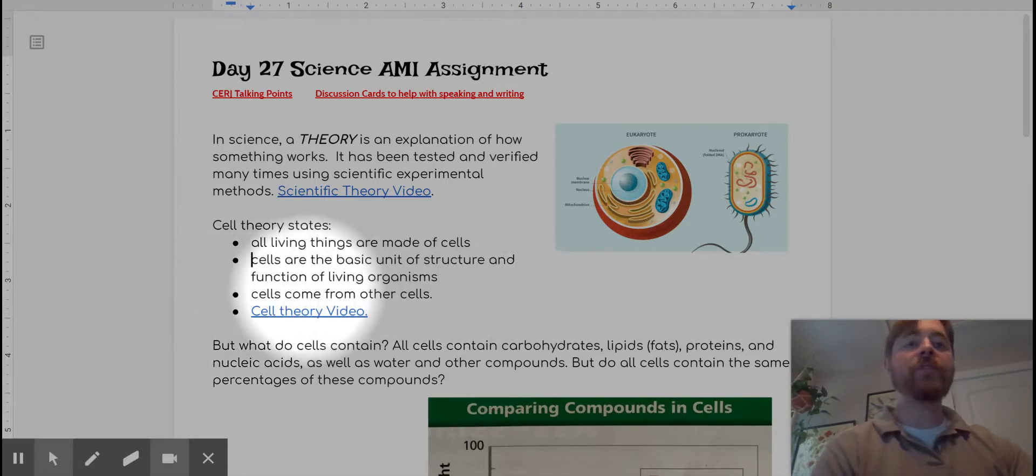And the third part, cells come from other cells. What that means is cells don't just spontaneously appear out of thin air or from non-living material. They come from other existing cells. And then I have a cool video for you about cell theory and how it came about.